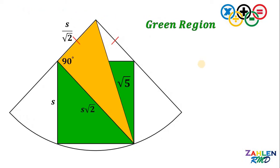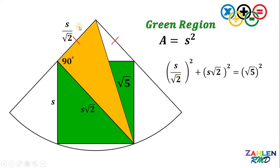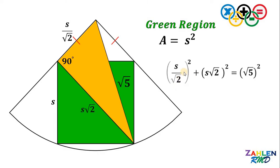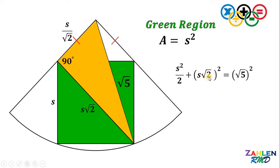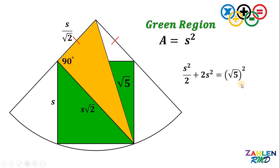The area of the square is equivalent to S squared, so we need to find the value of S squared. Using the Pythagorean theorem in this right triangle: S over square root of 2, quantity squared, plus S times square root of 2, quantity squared, equals the hypotenuse squared, which is square root of 5 quantity squared. Simplifying: S squared over 2, plus 2 times S squared, equals 5.